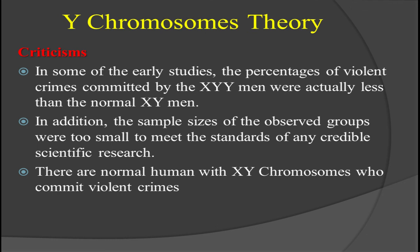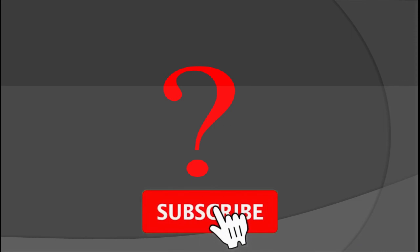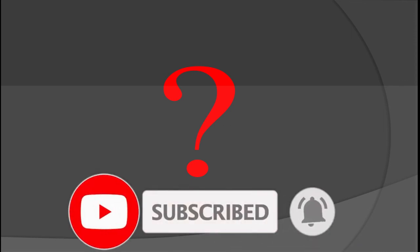That was about the Y chromosome theory in the field of criminology, which contributed significantly to explaining criminal behavior with respect to the biological school of thought. It has become quite outdated and is not contributing a lot to our criminal justice system today, but its contribution to the development of criminology remains valuable. I hope you guys have understood this lecture. If you have any questions, queries, or confusions, you can ask in the comment section below. If you haven't subscribed to my channel yet, please subscribe and press the bell icon to get notifications of my upcoming lectures. Thank you very much. God bless you.